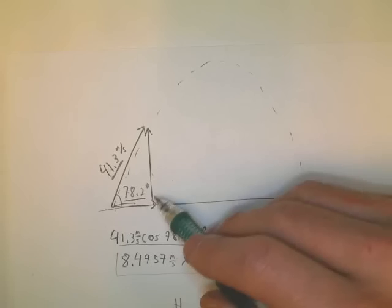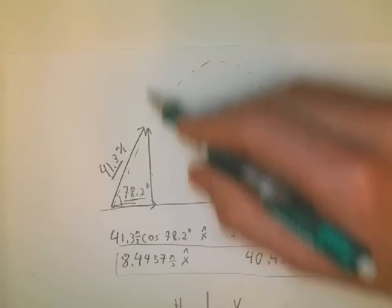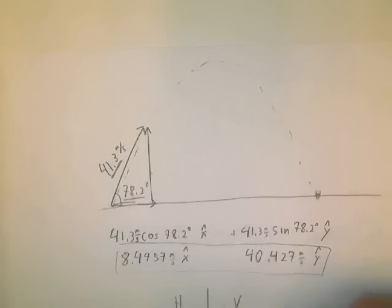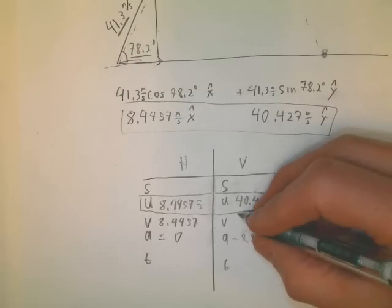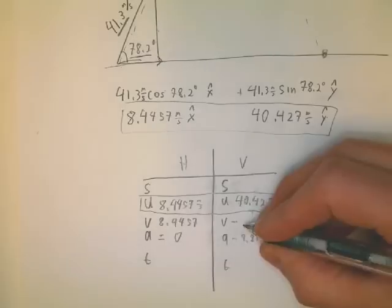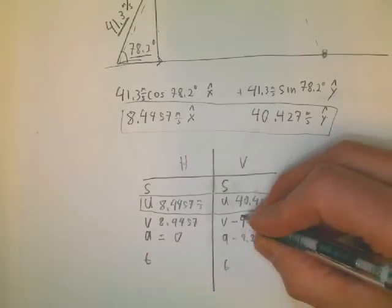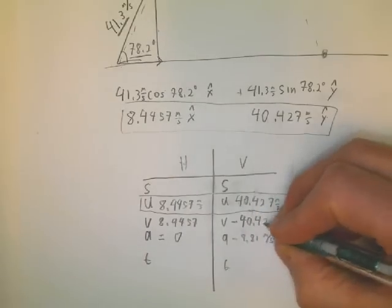So this guy, the final velocity is just negative 40.427 meters per second if the ground is level. We also know that this is zero. And now we're really pretty much all set.